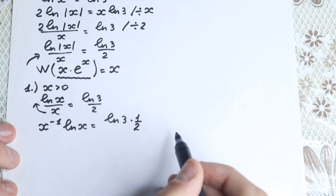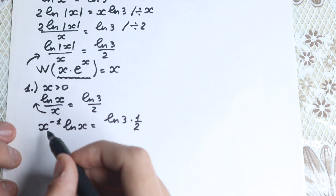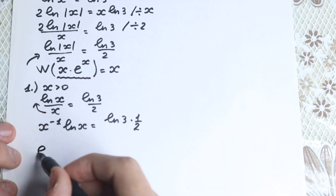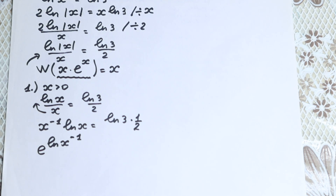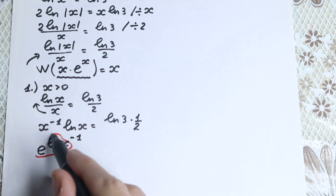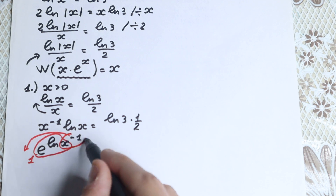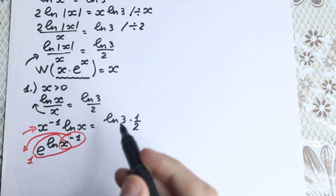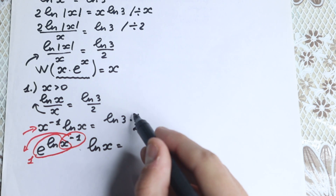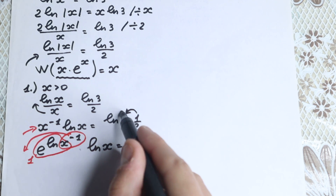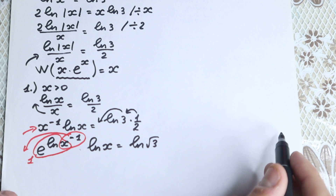Now let's rewrite x to the power minus 1 as e to the power (natural log x), all raised to the power minus 1 — since e to the natural log x equals 1 times x, which is just x. So the expression becomes: e to the power (natural log x) to the power minus 1, times natural log x, equals natural log 3 times one half. We can bring the one half into the argument as a power, giving us natural log of square root of 3 on the right.